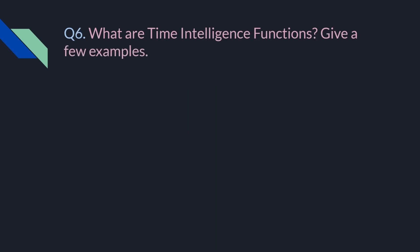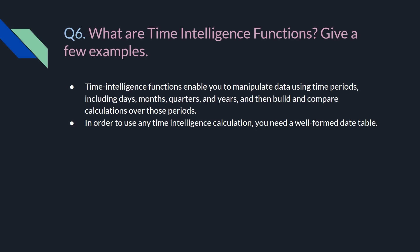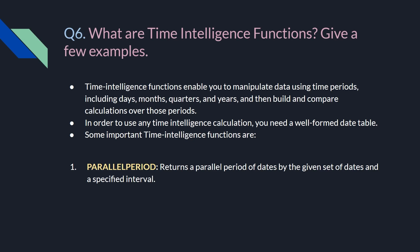Question number six is the most important question in the DAX part of Power BI: what are time intelligence functions, and can you give a few examples? Time intelligence functions enable you to manipulate data using time periods including days, months, quarters, and years, and build and compare calculations over those periods. In order to use any time intelligence calculation, you need to have a well-formed date table. One important function is PARALLELPERIOD, which returns a parallel period of dates by a given set of dates and a specified interval.